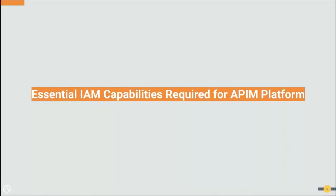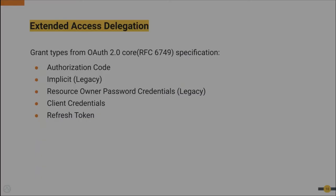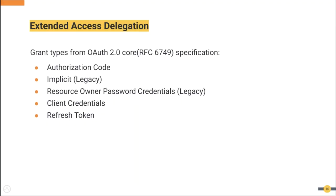Let's see what the essential IAM capabilities are for an API platform. First, OAuth 2.0 extended access delegation. The OAuth 2.0 core specification defines five main grant types: authorization code, implicit, resource owner password, client credentials, and refresh token. But not all systems are based on OAuth 2.0, so OAuth 2.0 allows defining new extension grant types to support additional use cases and to provide reach between OAuth and other trust frameworks.